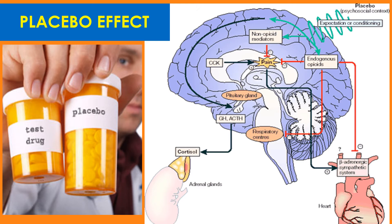If I give a hundred people with headaches a sugar pill and tell them it's a powerful medicine from Japan, maybe 30 of them see their headache go away. So if I have another treatment that can beat 30 out of 100, then I know that treatment is really having an effect.